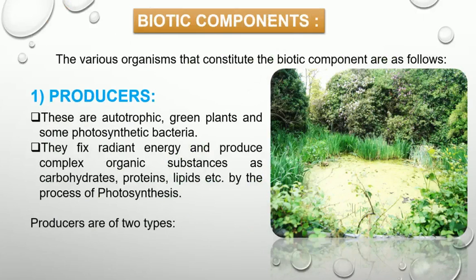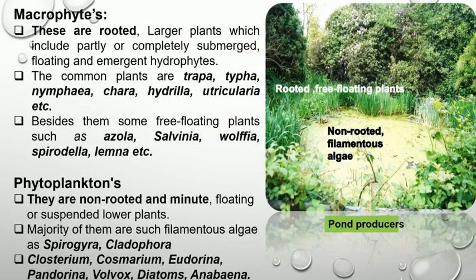Then the biotic components. Biotic components are the living factors, which include producers, consumers and decomposers. Producers are autotrophic green plants and some photosynthetic bacteria. The producers fix solar energy in the presence of water and carbon dioxide and produce food by the process of photosynthesis. Producers are of two types: macrophytes and phytoplanktons. Macrophytes are the rooted submerged large plants found in the marginal area of the pond. Common plant species found in the pond include Trapa, Typha, Nymphaea, Chara, Hydrilla, and Utricularia. Besides them, some free-floating plants such as Azolla, Salvinia, Wolffia, Spirodela and Lemna.